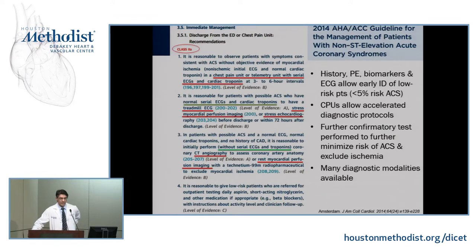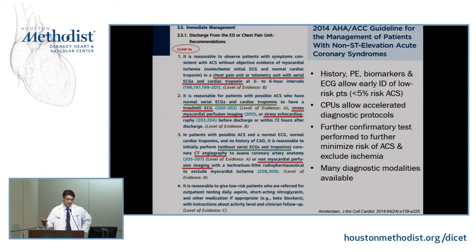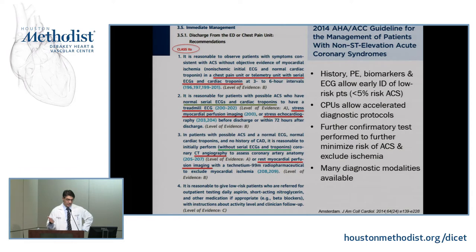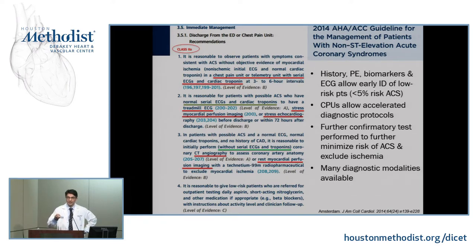If you look at the 2014 ACC guidelines as to how you should evaluate somebody with acute chest pain, this is what we do bread and butter every single day. Most of the time they get admitted to a chest pain unit or some sort of telemetry unit. You perform serial EKGs and cardiac troponins every six hours. And then if you have normal EKGs and normal troponins, you have choices: you can do a treadmill EKG, stress myocardial perfusion imaging, or stress echocardiography — in the hospital or, if very low risk, even send patients home, but with testing required within 72 hours. That is in the guidelines.